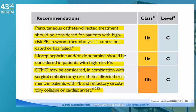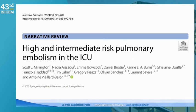ECMO may be considered — a 2B recommendation, so we are getting down in the level of evidence — in combination with surgical embolectomy or catheter-based treatment in patients with PE and refractory collapse or cardiac arrest, which is the catastrophic form of PE. This is the first time ECMO appears in the PE guidelines; the 2015 guidelines had no mention of ECMO. I believe the recommendation will increase in coming years, and in a couple of years it will be Class 1 for catastrophic PE.